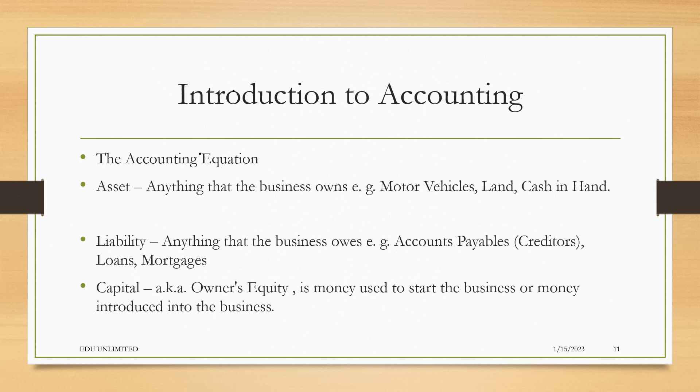Some examples of liabilities are accounts payables, also called creditors, loans, and mortgages. Capital, also known as owner's equity, is the money used to start the business or money introduced into the business. Simply put, capital is the net worth of the business — when we subtract our liabilities from our assets, that is our capital.